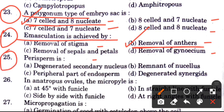Question 25: What is perisperm? Options are degenerated secondary nucleus, remnant of nucellus, peripheral part of endosperm, or degenerated nucleus. The answer is A, degenerated secondary nucleus.